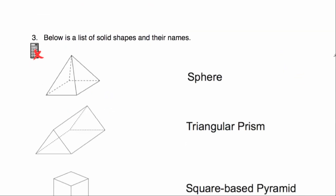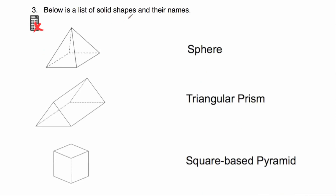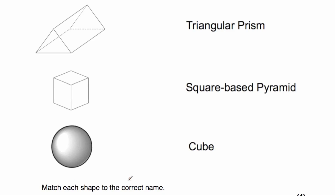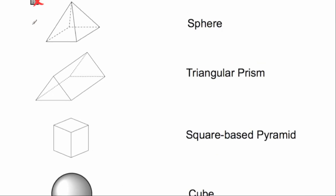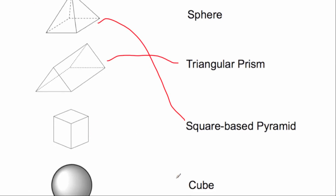Question number 3: below is a list of solid shapes, and we've been asked to match each shape to the correct name. On the left-hand side we've got a square-based pyramid, a triangular prism, a cube, and a sphere at the bottom. So we join the square-based pyramid to its name, triangular prism to its name, cube to its name, and sphere to the word sphere.